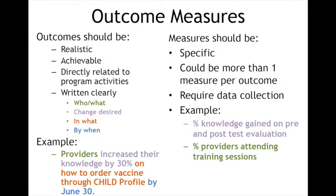Here is a summary of ways to measure your outcomes. Outcomes should be realistic, achievable, and directly related to program activities, and clearly written. This is very similar to the SMART definition — Specific, Measurable, Attainable, Realistic, and Time-bound. So make your outcomes SMART.